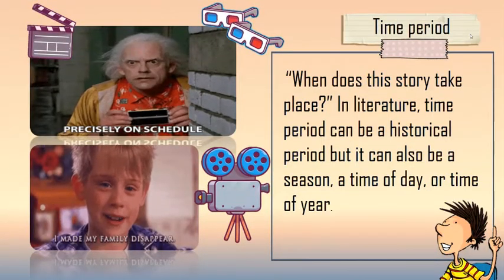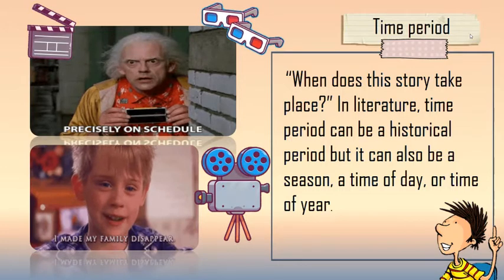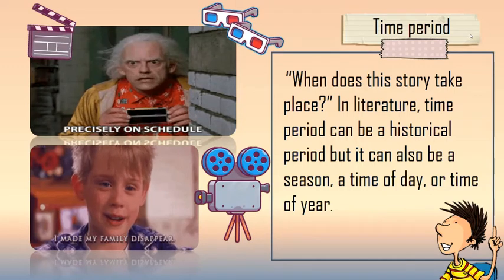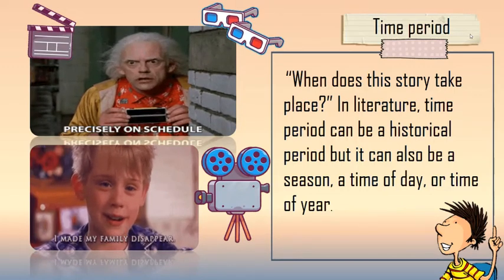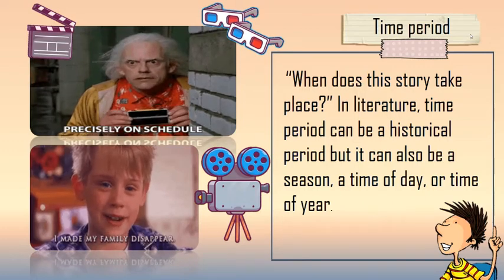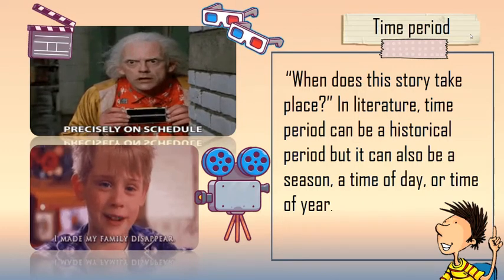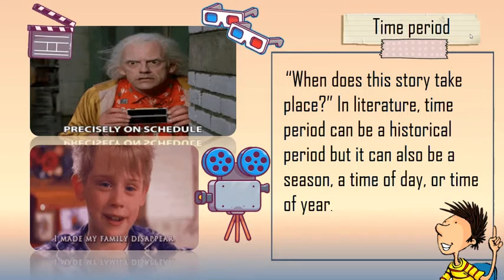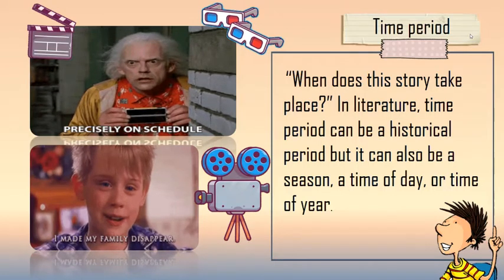The next element of settings is the time period — when does the story take place? In literature, time periods can be a historical period, but also a season, a time of day, or time of year. An example is Back to the Future because of its time travel, and the Home Alone film, which is set during the Christmas season.